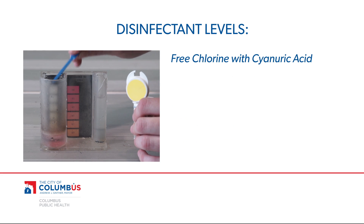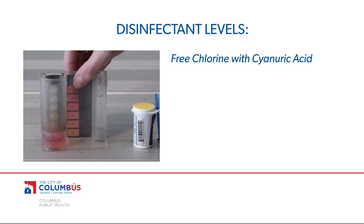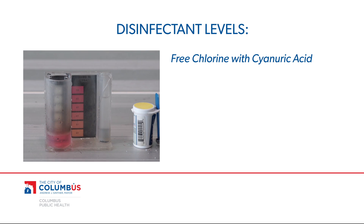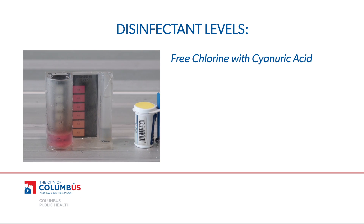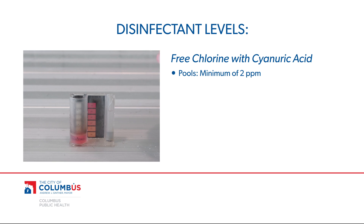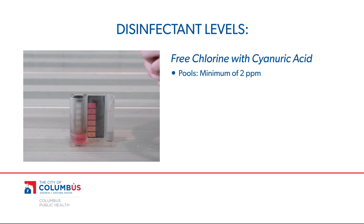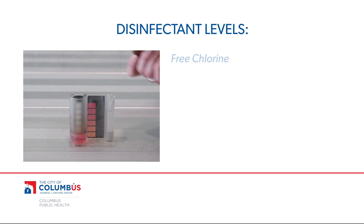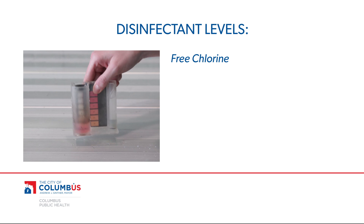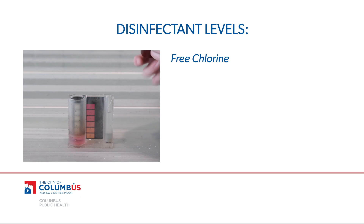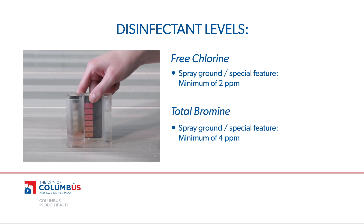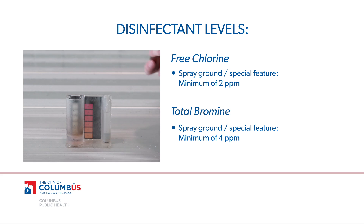If you use a chlorine product with cyanuric acid or add it as a supplement, then the disinfectant level must be higher, with free chlorine at 2 ppm in a pool and 3 ppm in a spa. Spray grounds and special features must maintain a free chlorine level of 2 ppm or 4 ppm bromine as measured from the spray orifice.